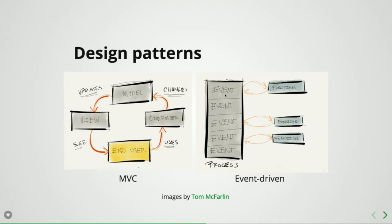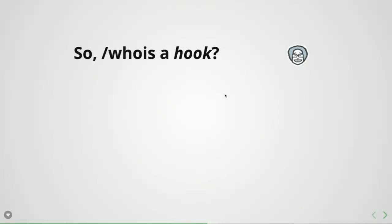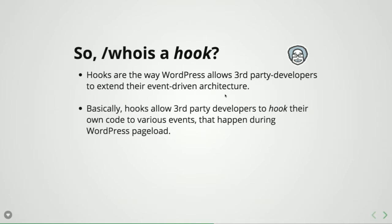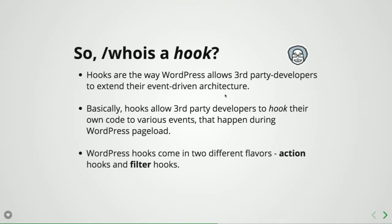Basically, the process of creating a WordPress page on any page load is a long series of events. What the hook system does in WordPress is it allows you to add your own custom code and attach it to those events. So whenever WordPress is doing something, you can say: also do something else, also do something else. A hook is basically a definition — by telling WordPress: when you are doing this, also do that. Hooks are of two types in WordPress, and they allow third-party developers to extend WordPress functionality.